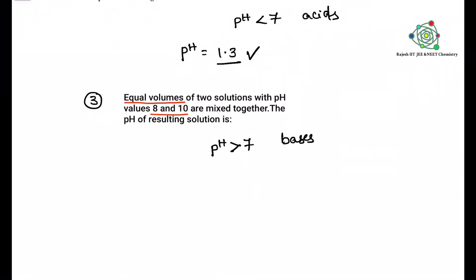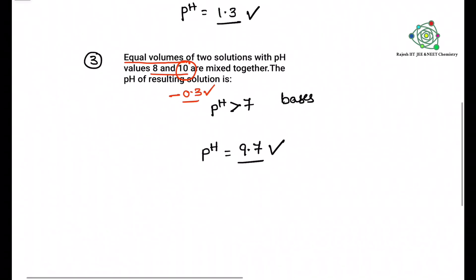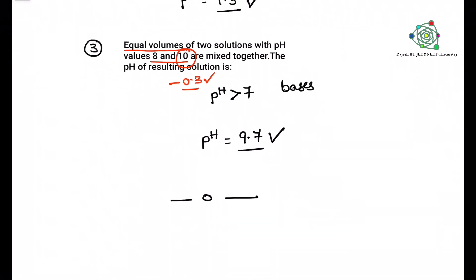So what can we do now? From the higher pH value, what is the resultant solution pH? From the two pH, higher pH minus 0.3 should be taken. So answer for this one is 9.7. Thanks for watching.